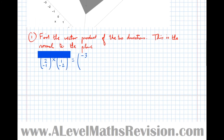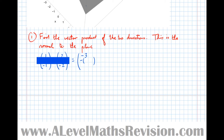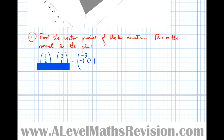Cover up the middle entry — the middle component is always negative. (1×−2) − (−1×2) = −2 − (−2) = 0, so the middle component is −0 = 0. Cover up the bottom entry: (1×1) − (2×2) = 1 − 4 = −3. So the cross product is (−3, 0, −3).